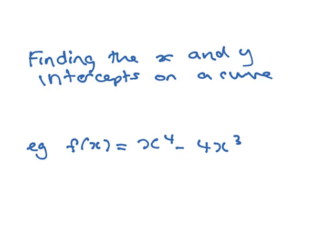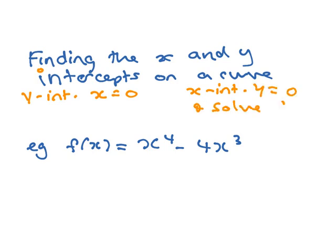Just going to look at finding the x and y intercepts on a curve. To get the y intercept, the y intercept is where x equals 0. And to get the x intercept, the x intercept would be where y equals 0. In this one you actually have to solve for x — you may have to factorize first and then solve each factor for 0.